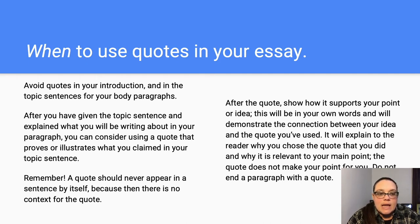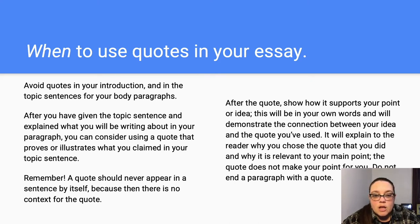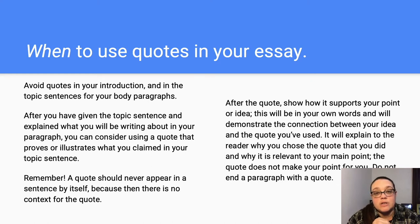After you've given the topic sentence and explained what you're writing will be about in your paragraph, you can consider using a quote that proves or illustrates what you claimed in your topic sentence. Remember, a quote should never appear in a sentence by itself because there is no context for the quote. After the quote, show how it supports your point or idea — this will be in your own words and will demonstrate the connection between your idea and the quote you've used. It will explain to the reader why you chose that quote and why it's relevant to your main point. The quote doesn't make your point for you; instead it helps support your claim and gives evidence that other people agree with you. Do not end a paragraph with a quote, because you need to add some analysis, and if you're ending on it there's no room for that analysis.